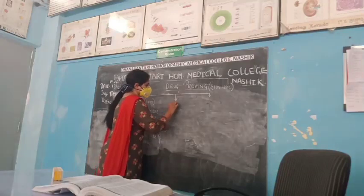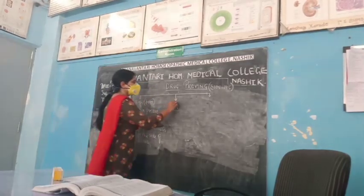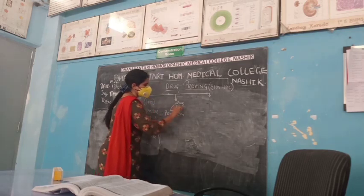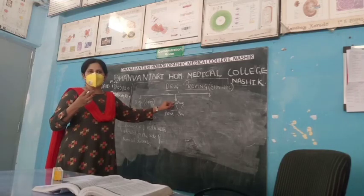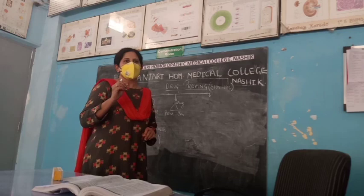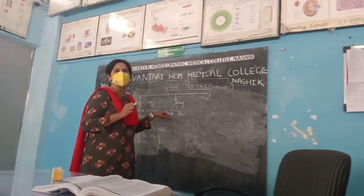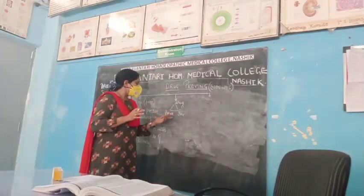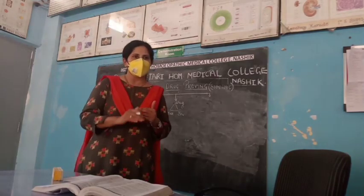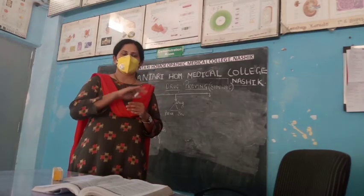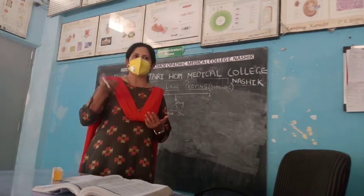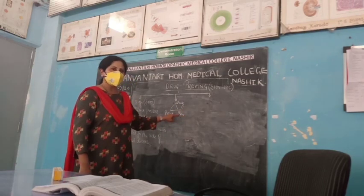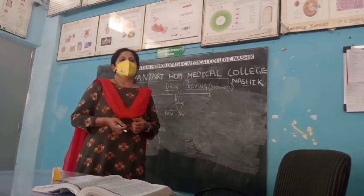Before starting the proving, we need certain things: the drug, the prover, and the environment. The drug given for proving should be genuine, no mixtures, and very pure. The prover should be healthy both physically and mentally. We can take many provers including small children, adults, old age, males, females with different constitutions.